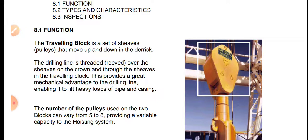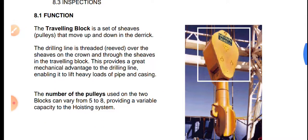The traveling block moves up and down in the derrick. The derrick is a steel structure with a pyramid shape, and inside it the traveling block, having a set of sheaves, moves up and down due to the rotation of those sheaves.